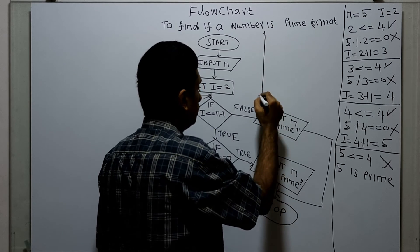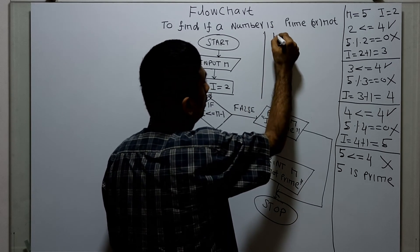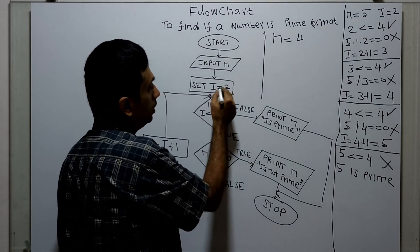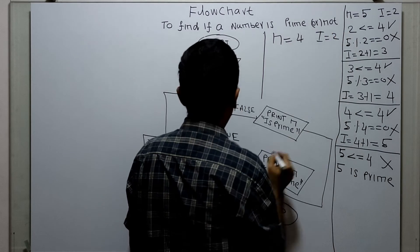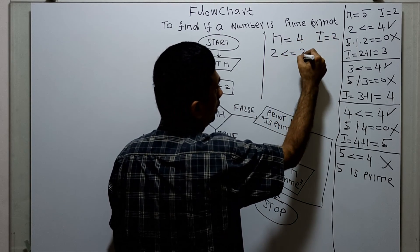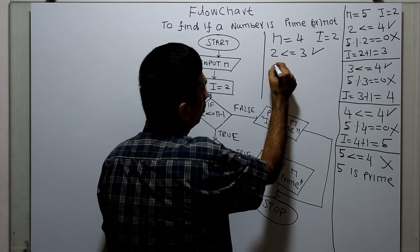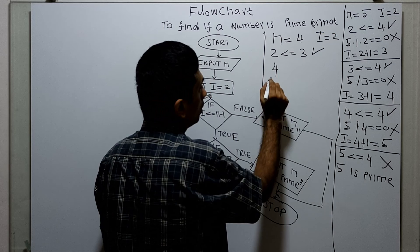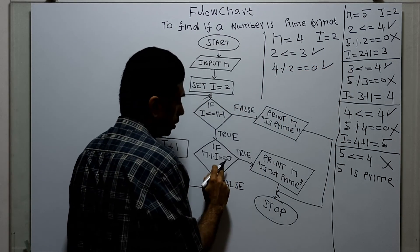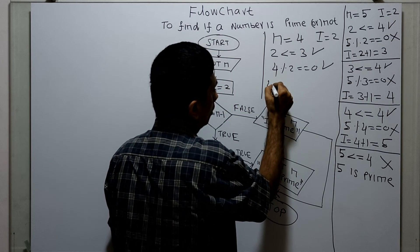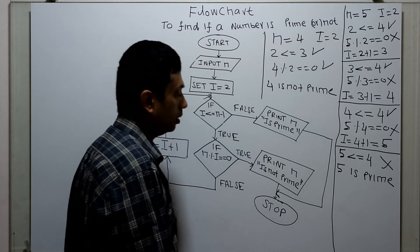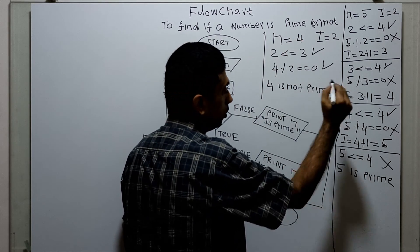Now we will take a non-prime number and check how this flowchart works. Taking n equal to four. Input i equal to two. Checking i less than or equal to n minus one: two less than or equal to four minus one, which is three — condition is true. Checking n modulo i equal to zero: four modulo two equal to zero — this is true. So we come out and print n is not prime: four is not prime. Four is indeed not a prime number.